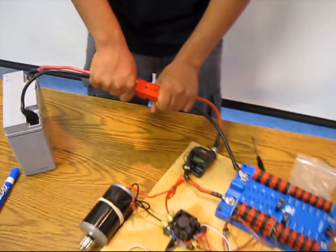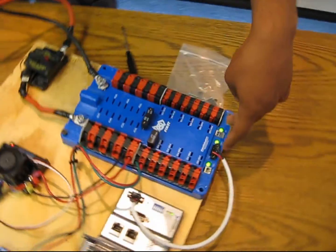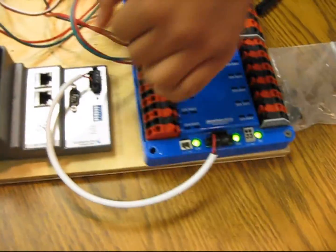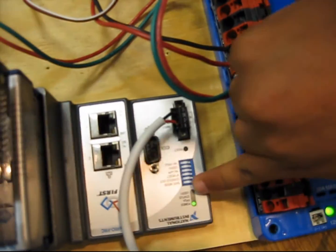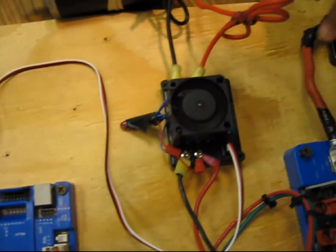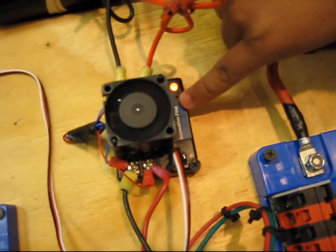If everything is wired correctly, you should be able to plug this battery in, close this, and you should see these lights come on. You should see the C-Rio start blinking. You should see the digital sidecar lights come on, and you should see the victor fan going on and this light blinking.